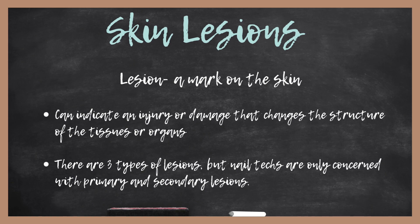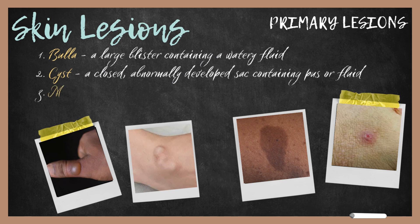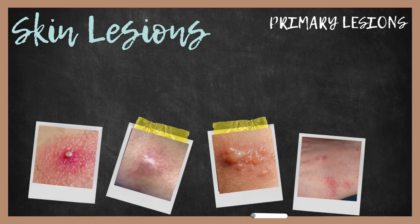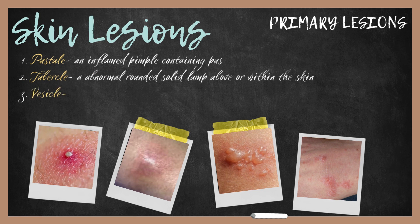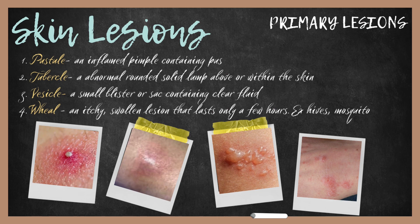A lesion is a mark on the skin that can indicate any type of injury or damage that can change the structure of tissues or organs. Some primary lesions include: a bulla, which is a large blister containing watery fluid; a cyst, which is a closed abnormal sac containing fluid or pus; a macule, which is a spot or discoloration on the skin such as a freckle; a papule, which is a pimple; a pustule, which is an inflamed pimple containing pus; a tubercle, which is an abnormal rounded solid lump above, within, or underneath the skin but larger than a papule; a vesicle, which is a small blister or sac containing clear fluid lying within or just beneath the epidermis; and a wheal, which is an itchy swollen lesion that lasts only a few hours, usually caused by a blow, insect bite, hive, or mosquito bite.